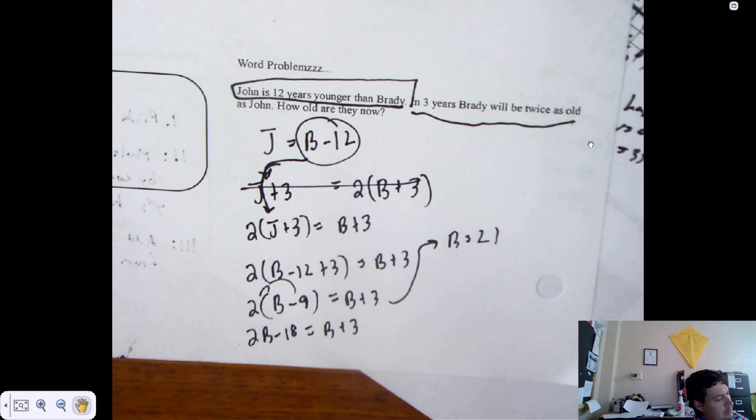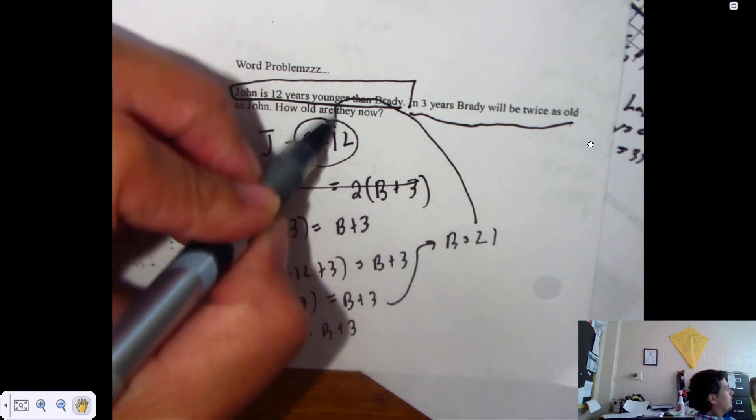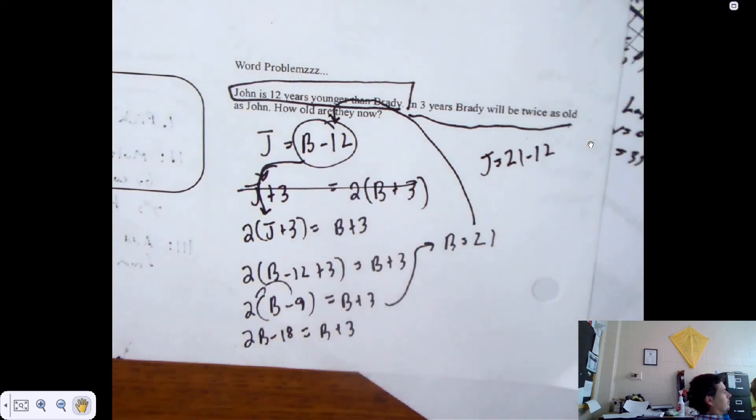So right now, Brady is 21. So in three years. No, no, no. The question is, how old are they now? We know Brady is 21 now. So we go back to this. 21 minus 12. John is 9.